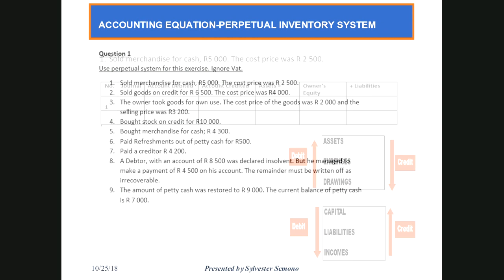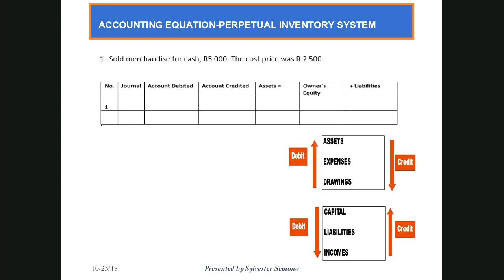Remember, we are using the perpetual system. I tried to make sure that I give you some rules. When you are dealing with the accounting equation, you need to understand the rules. I grouped some boxes together — assets, expenses, and drawings behave the same. Capital, liabilities, and incomes also behave the same. Everything in the first group increases on the debit side and decreases on the credit side.